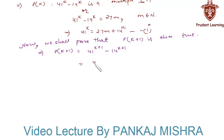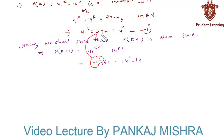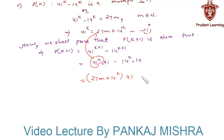This can also be written as 41 raised to k into 41 minus 14 raised to k into 14. Now we substitute the value of 41 raised to k equals 27m plus 14 raised to k from equation 1, giving us 27m plus 14 raised to k, all into 41, minus 14 raised to k into 14.